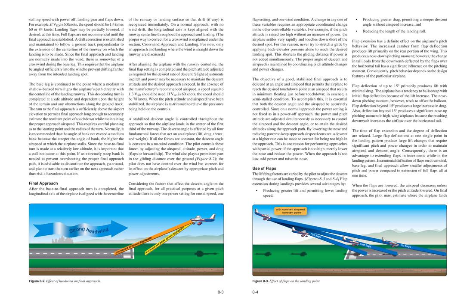A stabilized descent angle is controlled throughout the approach so that the airplane lands in the center of the first third of the runway. The descent angle is affected by all four fundamental forces that act on an airplane: lift, drag, thrust, and weight. If all the forces are constant, the descent angle is constant in a no-wind condition. The pilot controls these forces by adjusting the airspeed, attitude, power, and drag — flaps or forward slip.